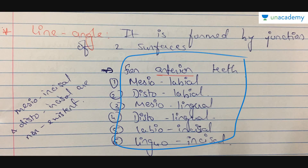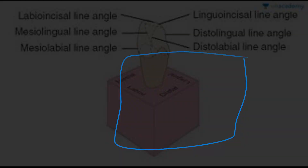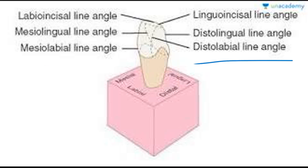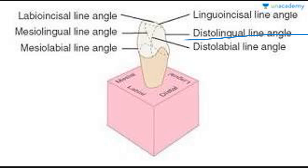These are the line angles for anterior teeth, shown in diagrammatic view. This is your mesiolabial, where the mesial portion and the labial portion of the tooth meet — that becomes your mesiolabial line angle. Then distolabial: when the distal portion and the labial portion meet, it becomes your distolabial line angle. The mesiolingual is the junction of the mesial and lingual portion. The distolingual is the junction of the distal and lingual portion. Then labioincisal — the incisal edge where the labial and incisal ridges meet — and then linguoincisal.